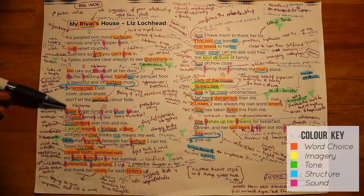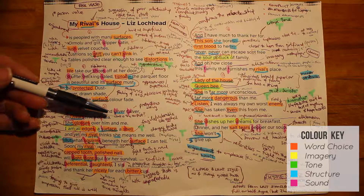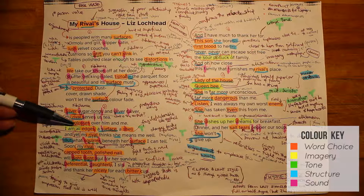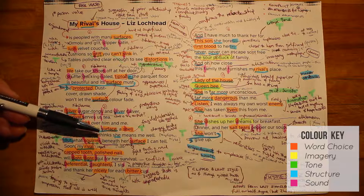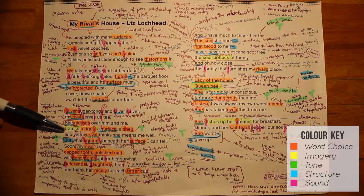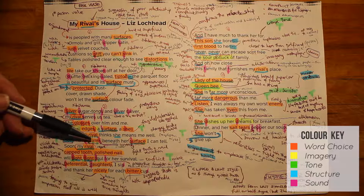The reference to 'my rival' reminds us of the title — this is the hostess — and she serves tea, which seems fairly pleasant. Yet we don't get a good vibe from this woman. She glosses over him and me; the word glosses again suggests superficiality. The persona says 'I am all edges, a surface, a shell,' hinting at her feelings of fragility and vulnerability — she's vulnerable like an eggshell that could break. The 'all edges' emphasises her discomfort. The sibilance continues with 'squirms beneath her surface,' and the word squirms is particularly effective because it suggests something really quite unpleasant going on, a darkness lurking within the hostess.